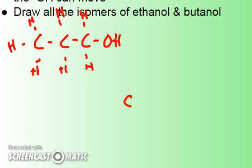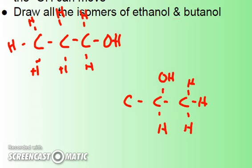Or, my other possibility is I could have my three carbons with the OH group attached to the center carbon. To name these is really simple — we simply use a one or two to indicate where that OH is. One-ethanol shows the OH is on the first group, and two-ethanol shows it's on the second group.